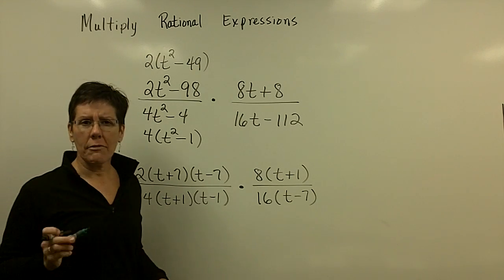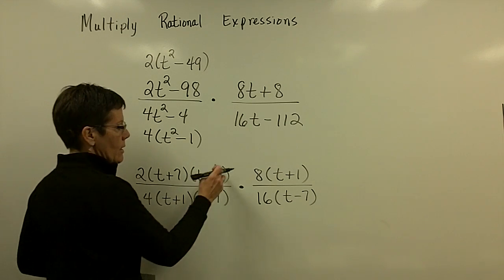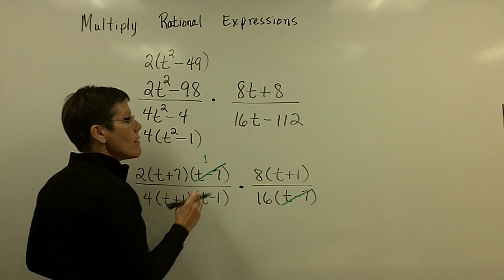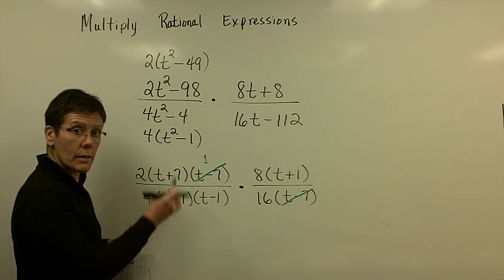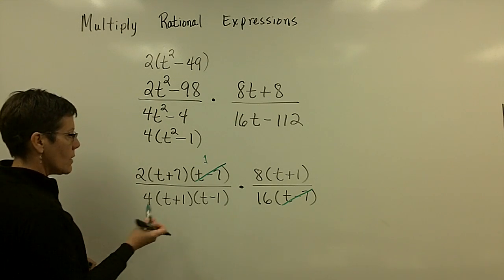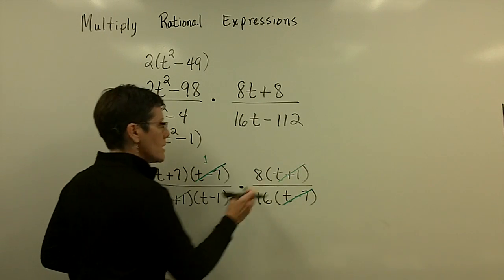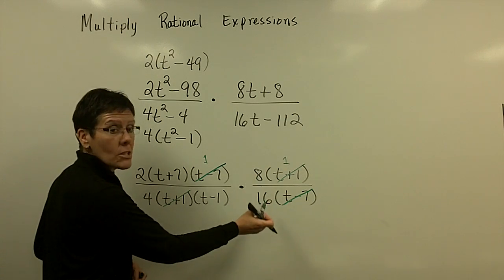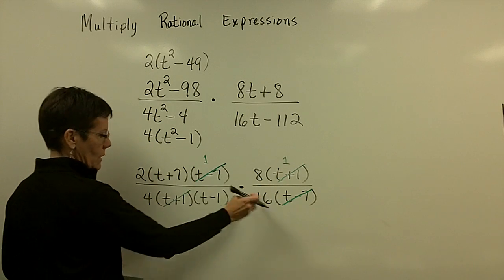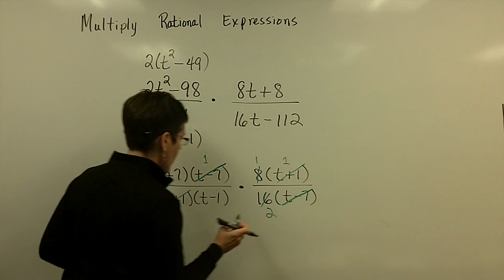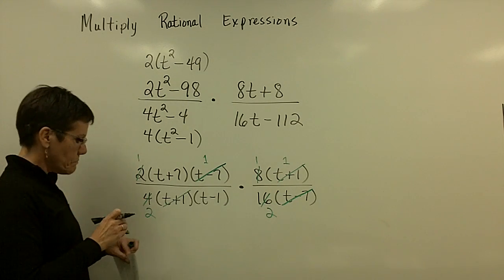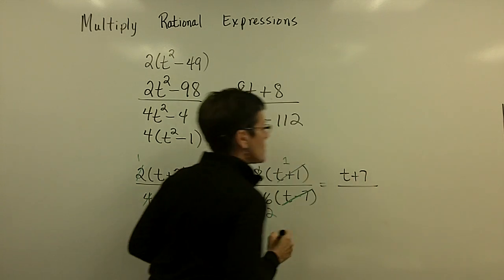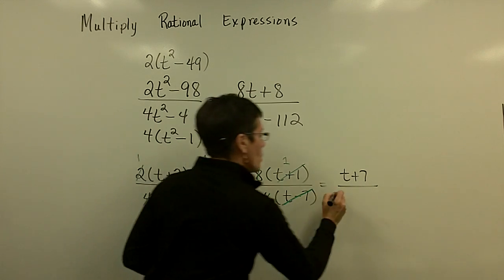I'm ready to remove common factors. When you remove a common factor — like t minus 7 over t minus 7 — it equals 1. Be prepared to leave a 1 in the numerator in case everything disappears. The t plus 1 and t plus 1 is equal to 1. Now reduce the numerical factors: 8 goes into here once and into here twice; 2 goes into here once and into here twice. All that's left in the numerator is t plus 7, and in the denominator 2 times 2 is 4, with the binomial t minus 1.